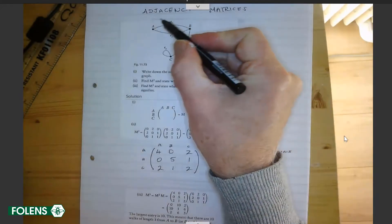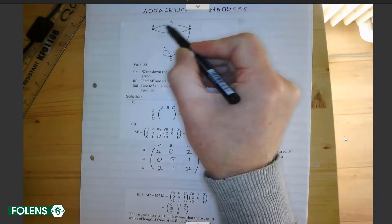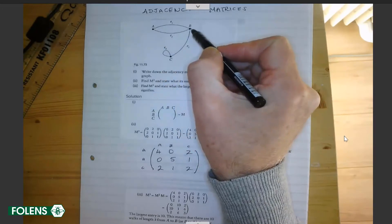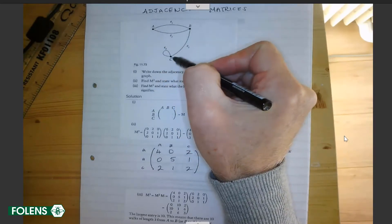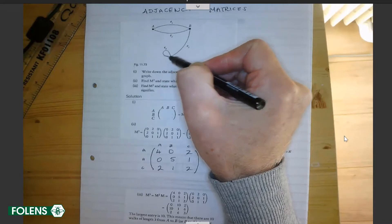If we have a graph, and A can go to B on two different routes, B is linked to C, and C has a loop.